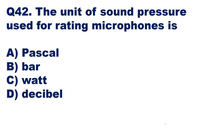The unit of sound pressure used for rating microphones is bar. A bar is equal to a sound pressure of 1 dyne per square centimeter. Speech provides sound pressures between 0.4 and 15 bars. For music, the pressure ranges from 0.5 bars to 1250 bars. So the sound pressure used for rating microphones is measured in bar — option B is the right answer.